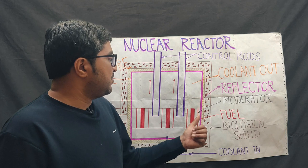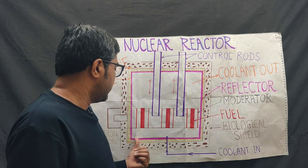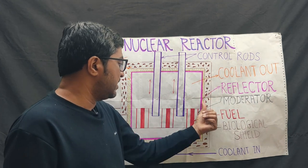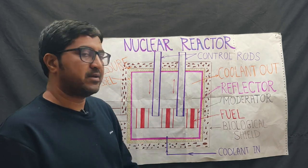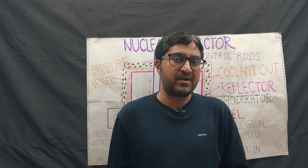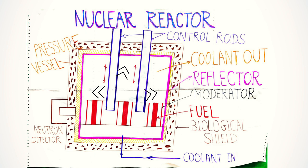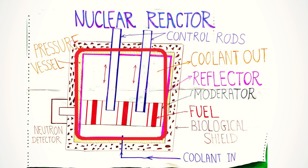The next component is reflector. Here you can see this pink color line, it is a reflector. The function of reflector is to reduce the loss of escaping neutrons. The inner surface is surrounded by a material which reflects escaping neutrons back into the core. This material is called reflector.